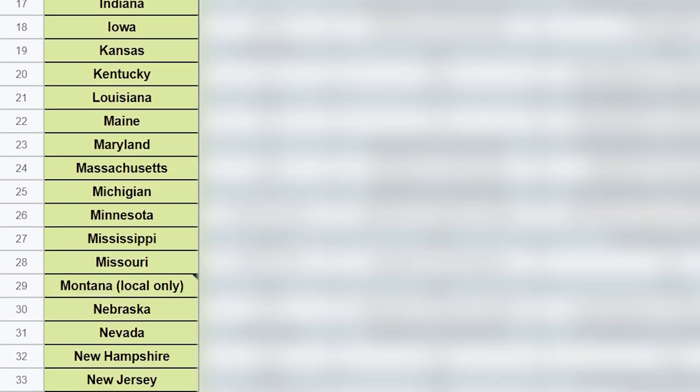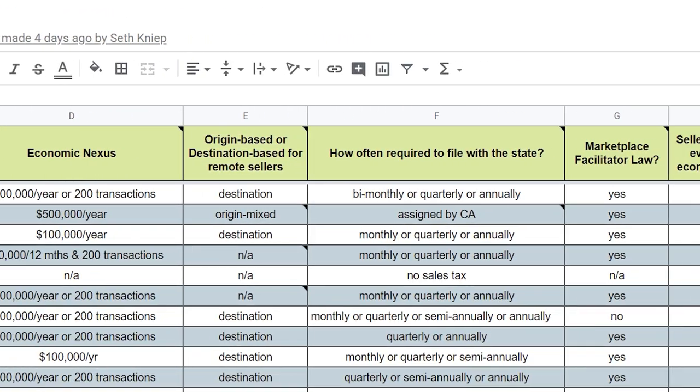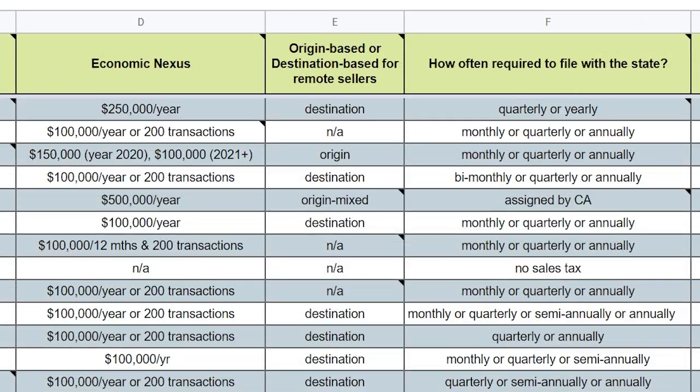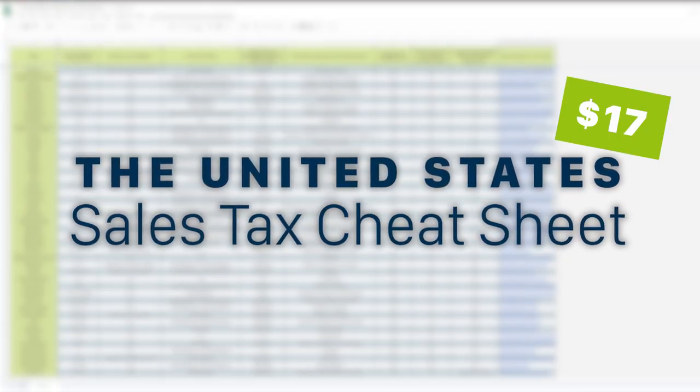Let me tell you a little about our cheat sheet. We took a ton of time to break all 50 states plus Washington DC down into our USA sales tax cheat sheet. In this tool, we list the range of sales tax for remote sellers, whether there's tax on shipping, what the economic nexus threshold is, whether a location is origin or destination based for remote sellers, how often you're required to file, if there's an active marketplace facilitator law requiring marketplaces like Amazon to collect and remit for you, if sellers need to report when they haven't met economic nexus, whether they've joined the streamlined sales and use tax agreement, as well as links to all official state websites. It is a massive amount of information and an invaluable tool. We do have a price for it — it's $17. It's going to be the first link in the description below.